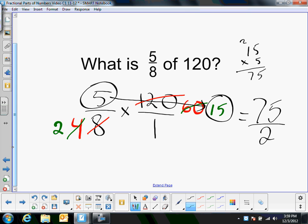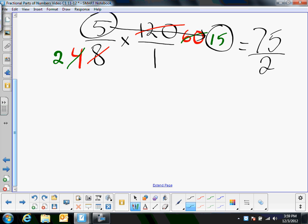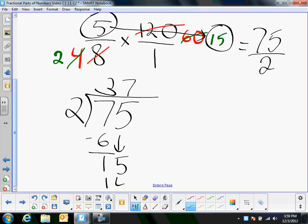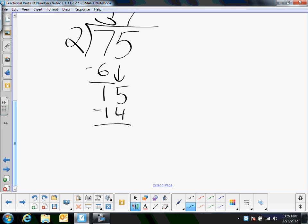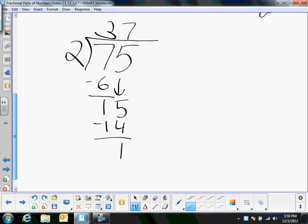This is an improper fraction, so I'm going to want to divide to turn it into a mixed number. So remember, you do that by doing 75 divided by two. Two goes into seven three times. That's going to give you six. Subtract, you get one. Bring down your five. And two goes into 15 seven times. That's 14. And you subtract, and you get one. And I've pulled down all my numbers.